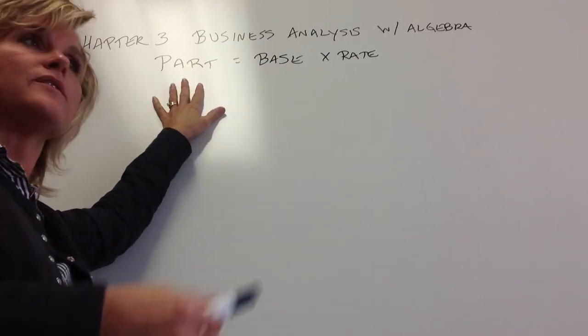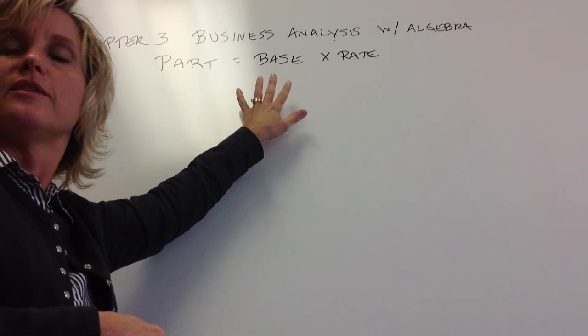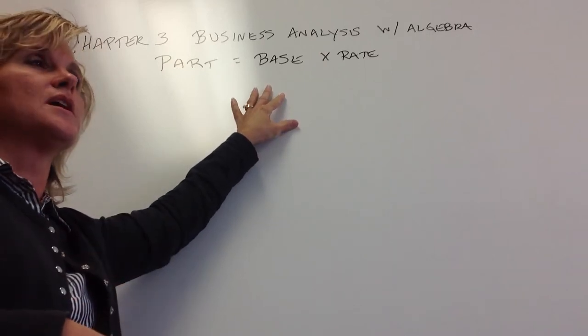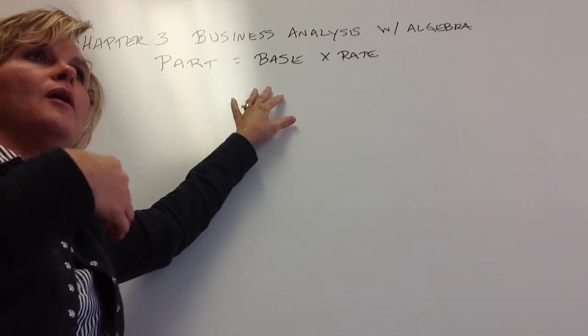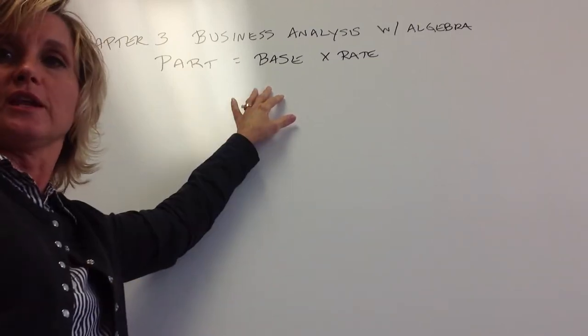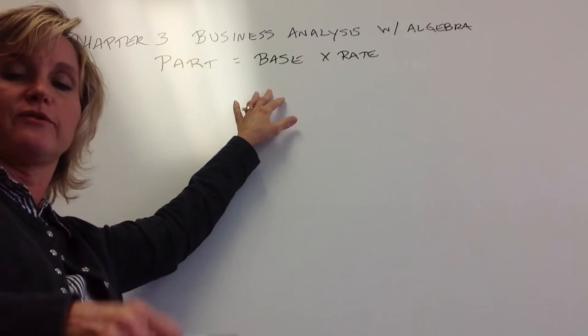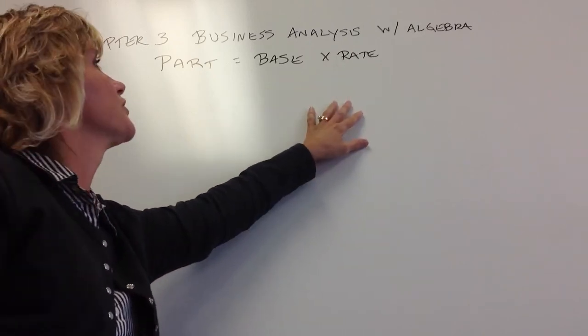The part is always the calculated number. The base could be last year's sales, it could be last year's income, it could be your sales amount that you're calculating sales tax on, which is going to be my first example. And then your rate is always a percentage rate.